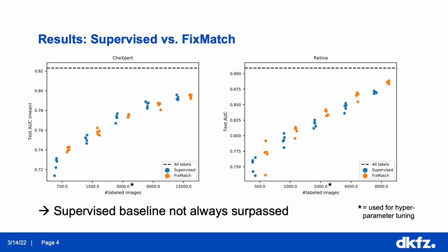In our experiments, we tested FixedMatch and the supervised baseline on different amounts of labeled images. Here you can see the results, where each dot corresponds to one random seed for the experiment. We observed that FixedMatch consistently outperforms the baseline on the retina dataset, but on CheXpert we could only see slight improvements in the lowest label regime. One possible reason why FixedMatch struggles to make use of the unlabeled data is the class imbalance present in it.